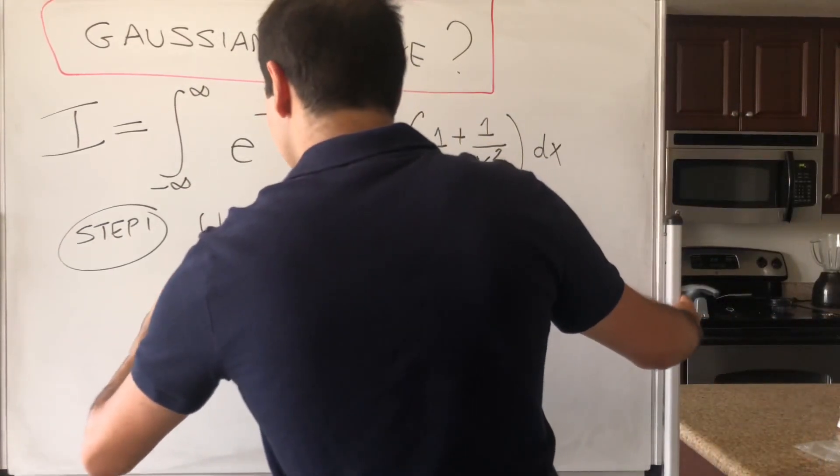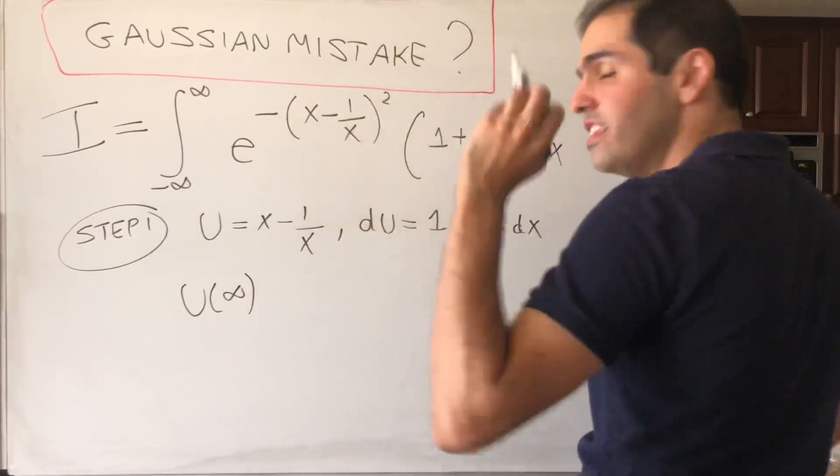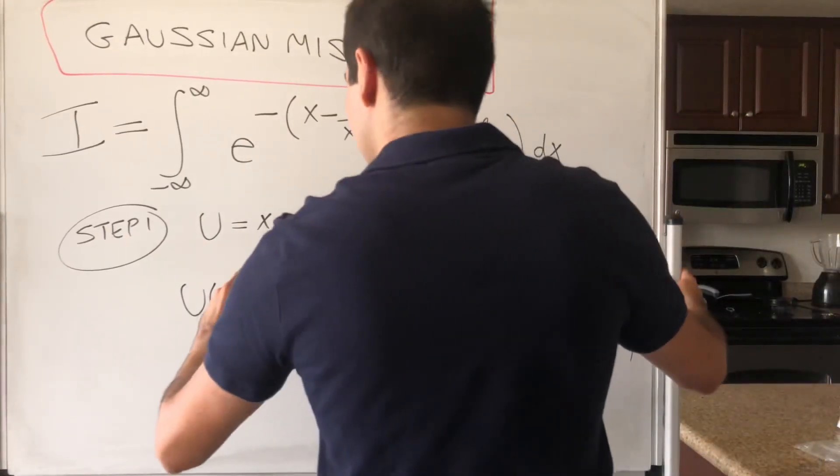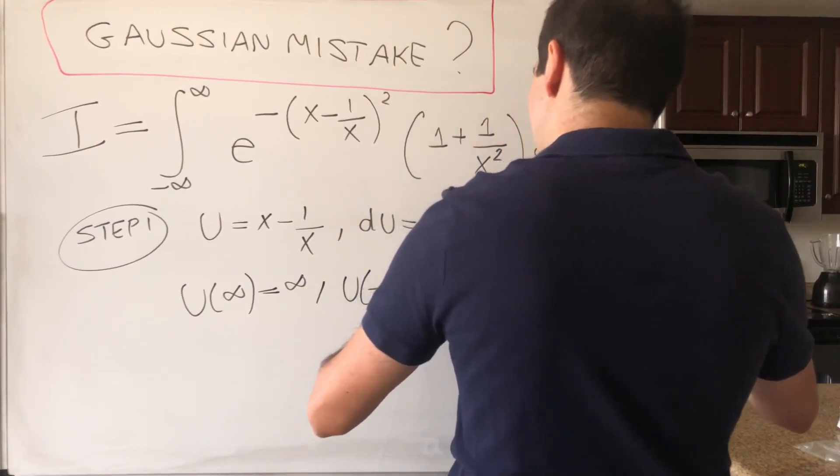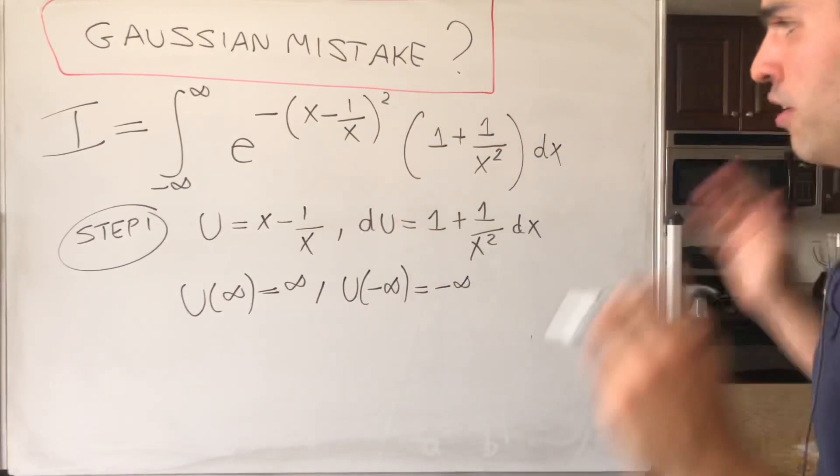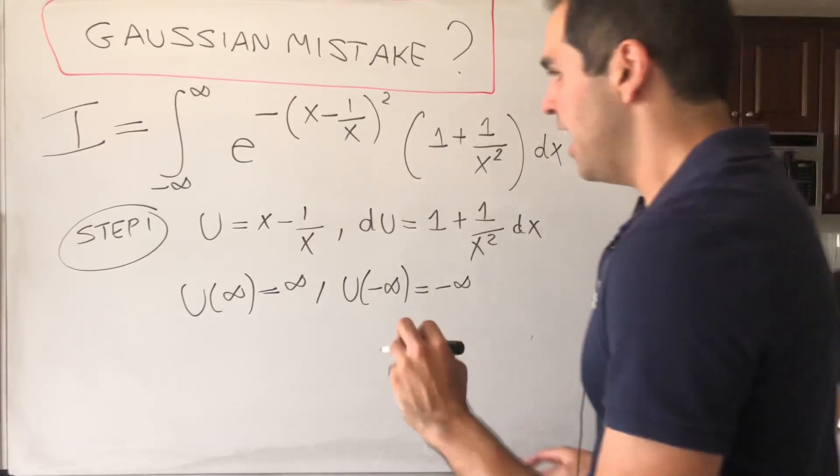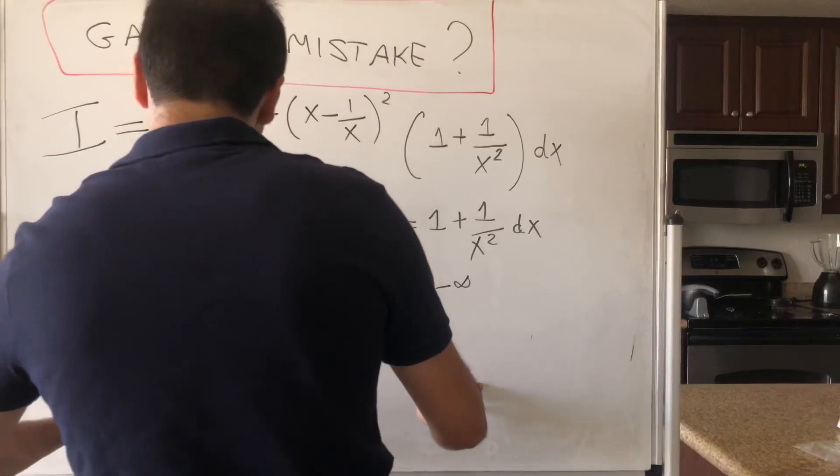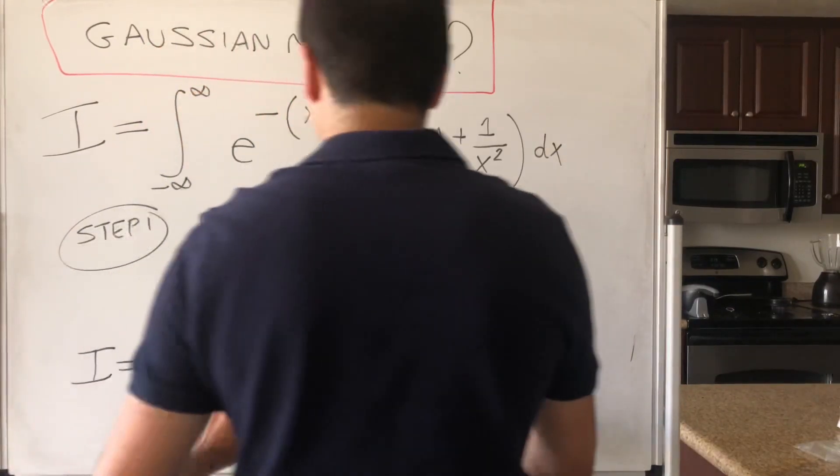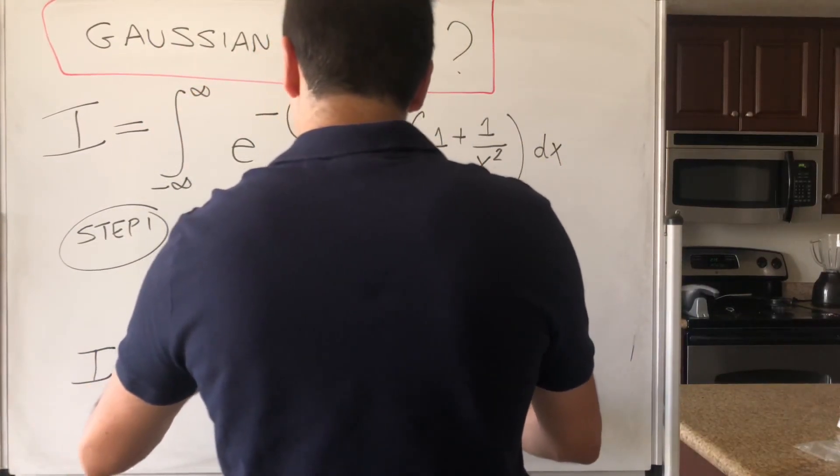And then u of infinity, well that's infinity minus 0 which is infinity, and then u of minus infinity, that is minus infinity minus 0, so that also works. And so in particular this integral i becomes the integral from minus infinity to infinity of e of minus u squared du.